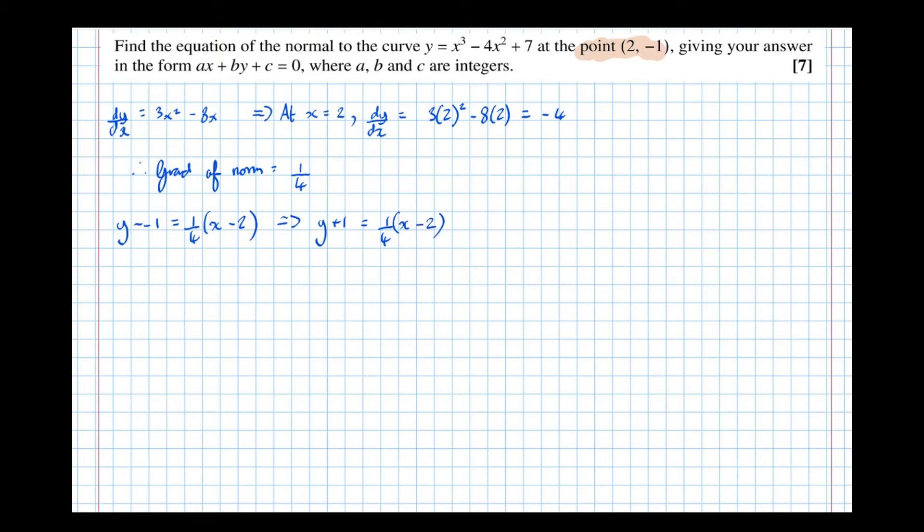Which means that y + 1 = 1/4(x - 2). So at this point we could multiply out the brackets, but there's an easier way. First of all, times by 4, and that gets rid of the fractions in this answer. So times both sides by 4, which means that 4y + 4 = 1 lot of x - 2.